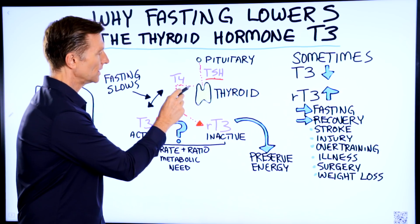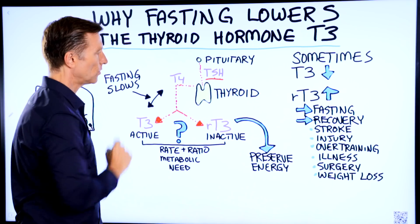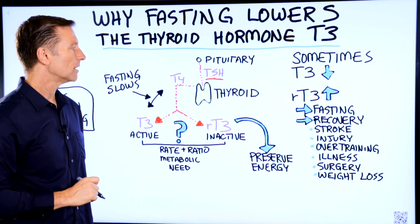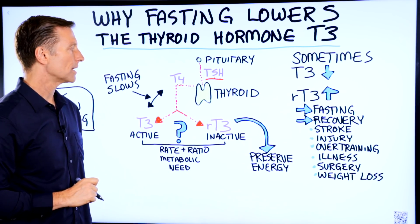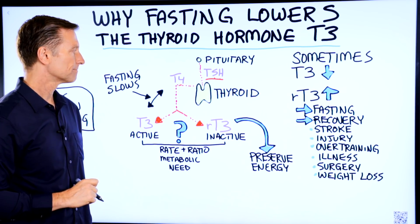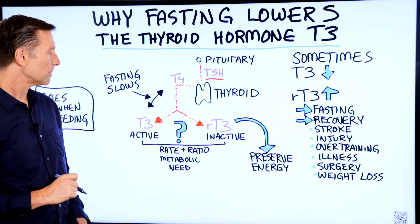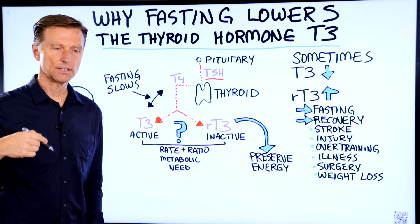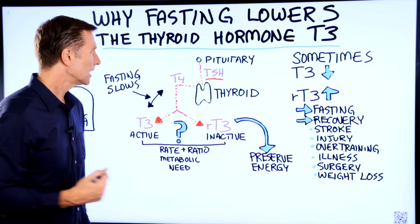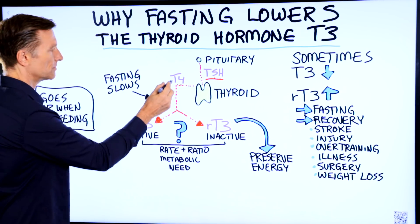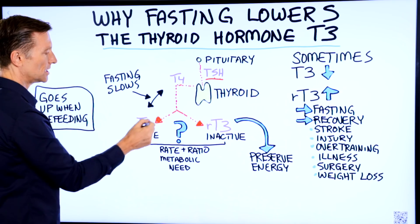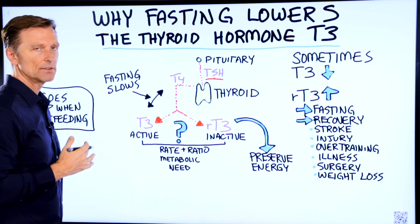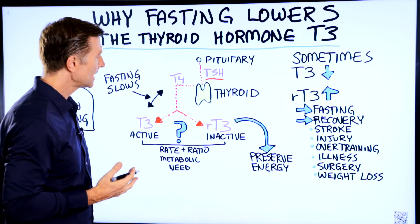The thyroid releases T4, which is the inactive form of the thyroid hormone. To become activated, it has to work through the liver into the kidney, where it converts from T4 to T3. And T3 is the active form of the thyroid hormone.